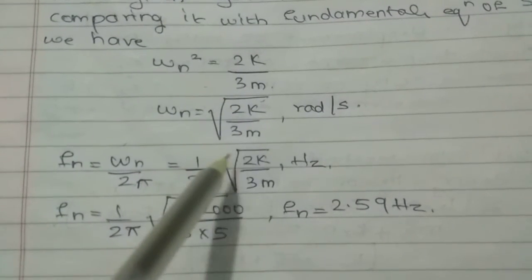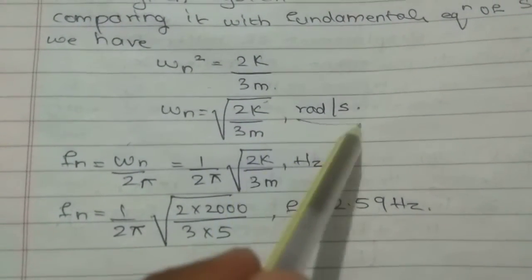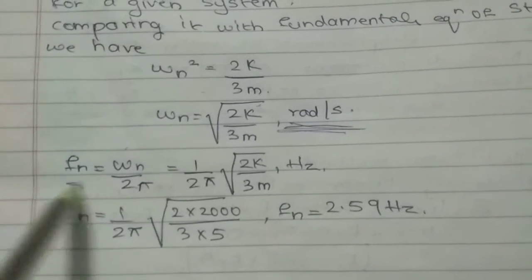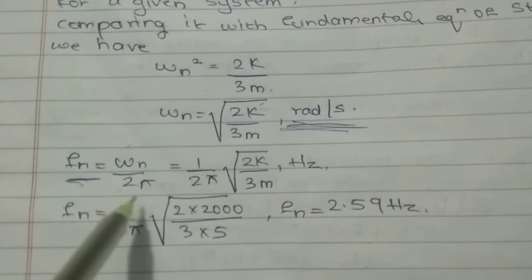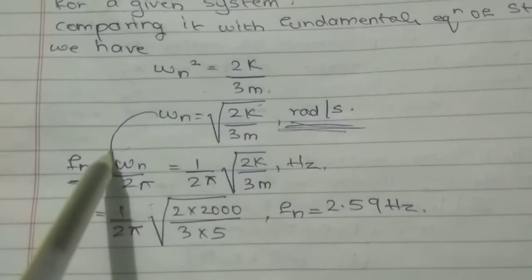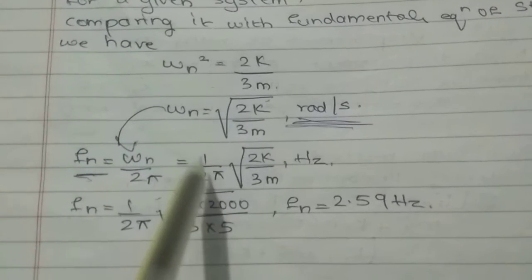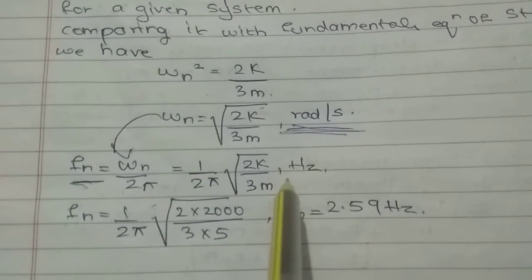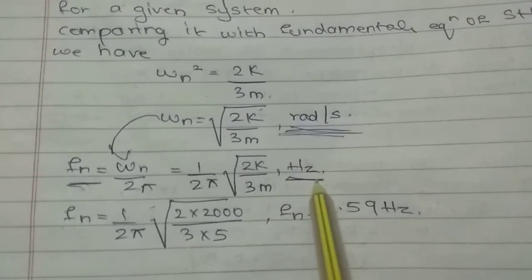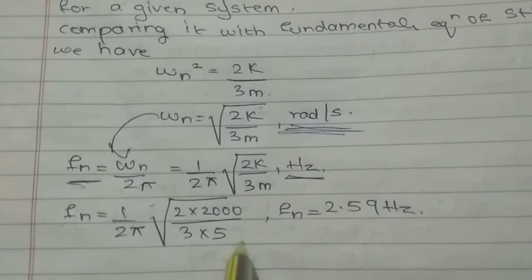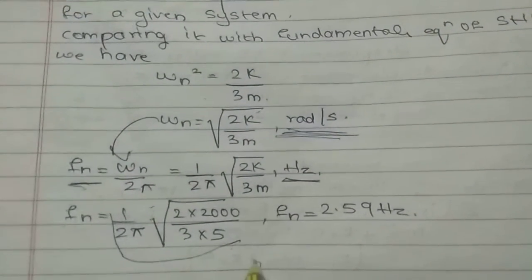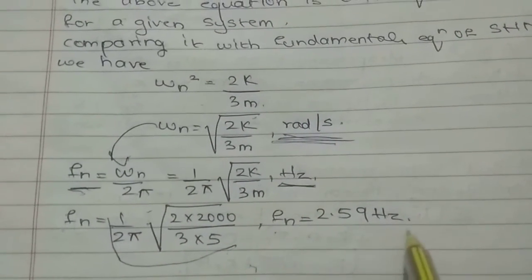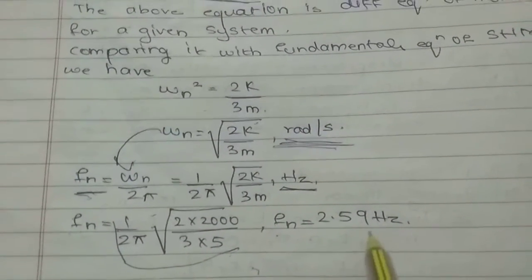So omega_n equals sqrt(2k / 3m) in radians per second. The natural frequency equals omega_n / 2π, which gives (1/2π)*sqrt(2k / 3m) in hertz. Substituting the given values, we get the natural frequency as 2.59 hertz.